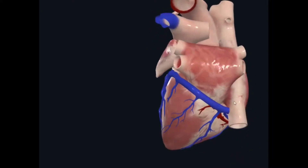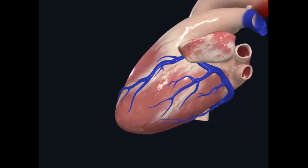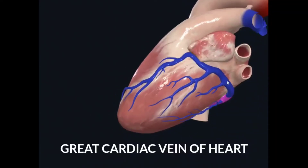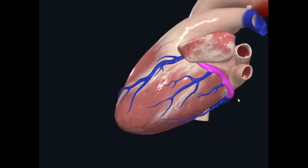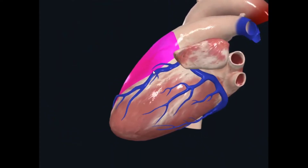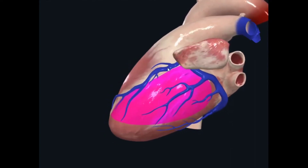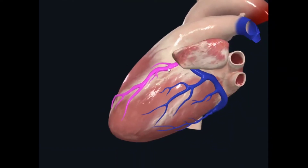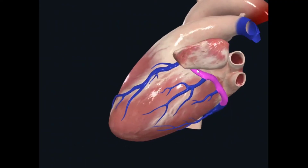Now when you see the tributaries of the coronary sinus, you have to first recognize this very important vein — the great cardiac vein. This great cardiac vein has one anterior vein on the anterior surface of the heart, present between the two ventricles — this is your right ventricle and this is your left ventricle. So this vein is present in the interventricular groove and is known as the anterior interventricular vein. This anterior interventricular vein continues as the great cardiac vein.